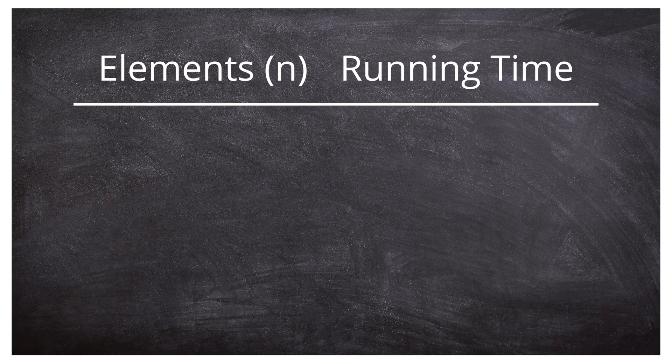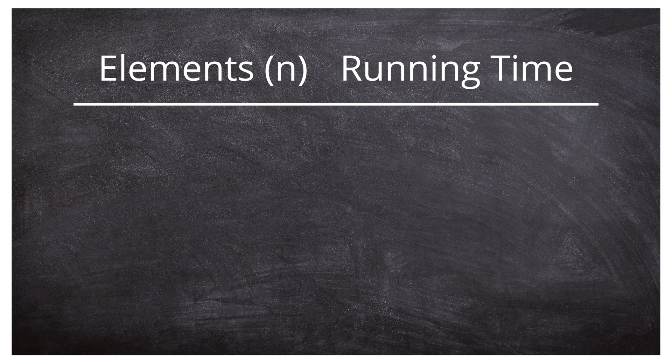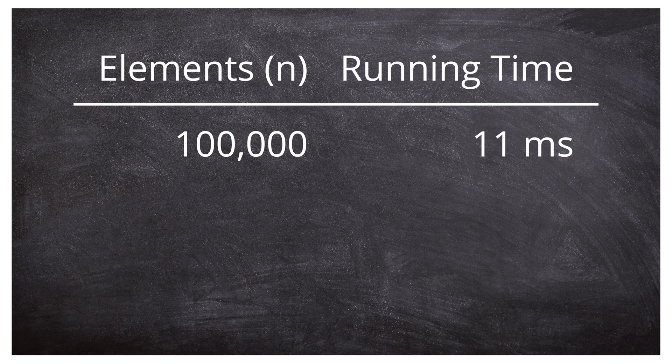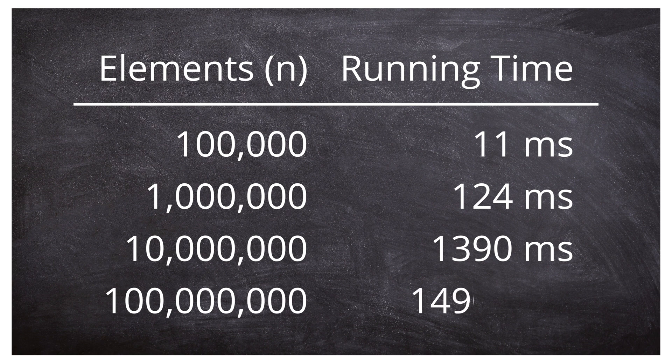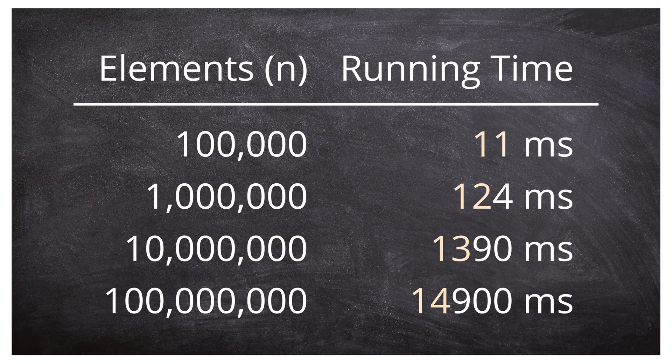An example. On my laptop, Merge Sort needs for 100,000 randomly arranged numbers about 11 milliseconds. For 1 million elements, it is 124 milliseconds. For 10 million elements, 1.4 seconds. And for 100 million elements, 15 seconds. You can see the quasi-linear growth pretty well.